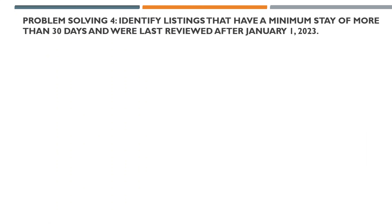Problem number four says to identify the listings that have a minimum stay of more than 30 days and were last reviewed after January 1, 2023. So how many listings have people that stayed more than 30 days, and their last review was greater than or equal to January 1, 2023 — people reviewed in early 2023?